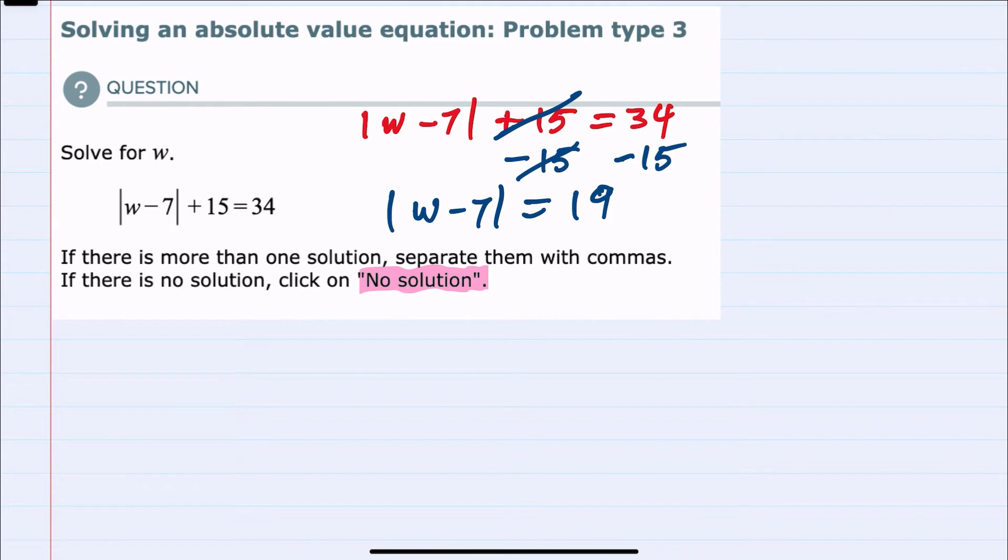If this would have been a negative 19, we could stop here and say that there's no solution because the absolute value can't be negative. Here we have a positive 19, so we can continue with solving.